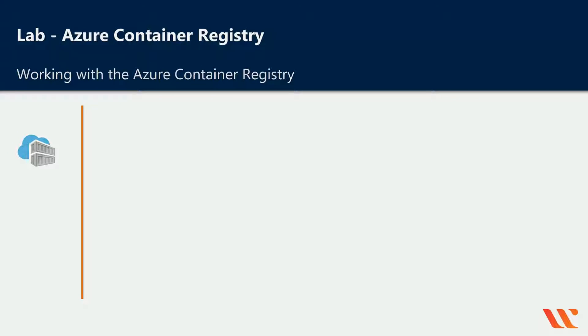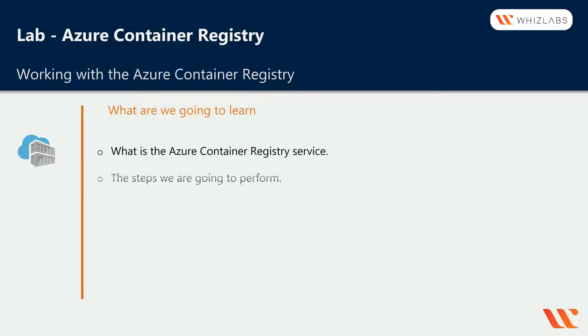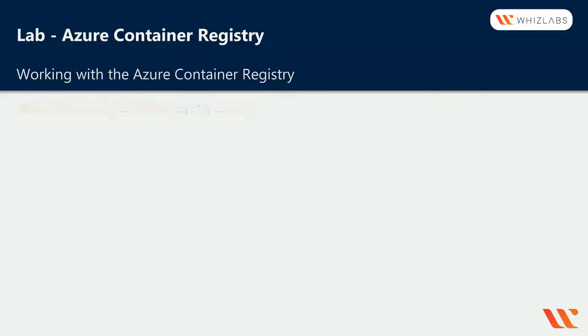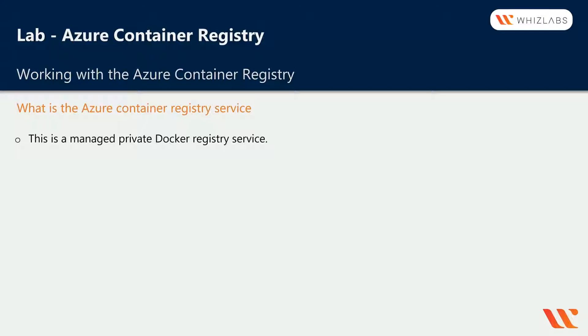In this chapter we are going to go through the Azure Container Registry. The Azure Container Registry service is a managed private Docker registry service. In prior chapters we worked with Docker containers on a Linux virtual machine, getting images from Docker Hub. But if a company wants to have their own private Docker registry service, they can use the Azure Container Registry service.